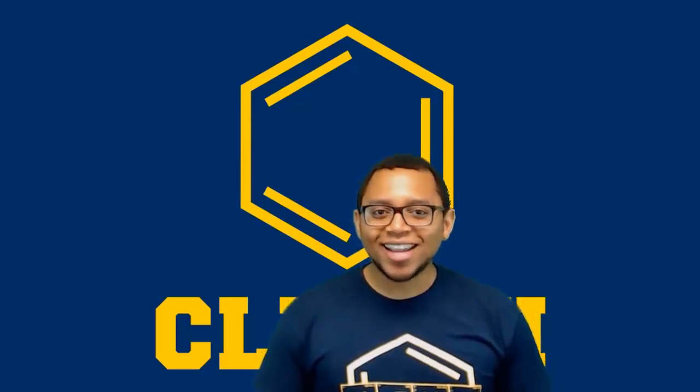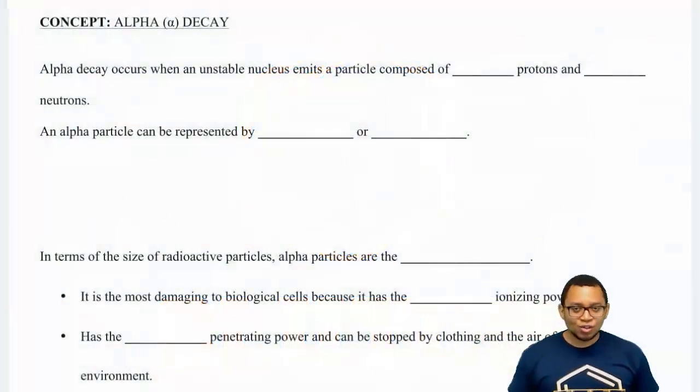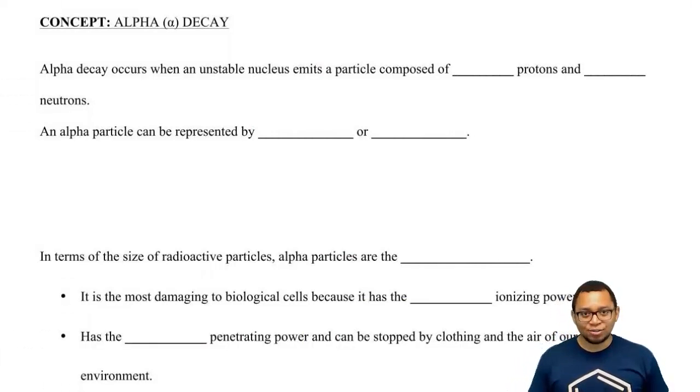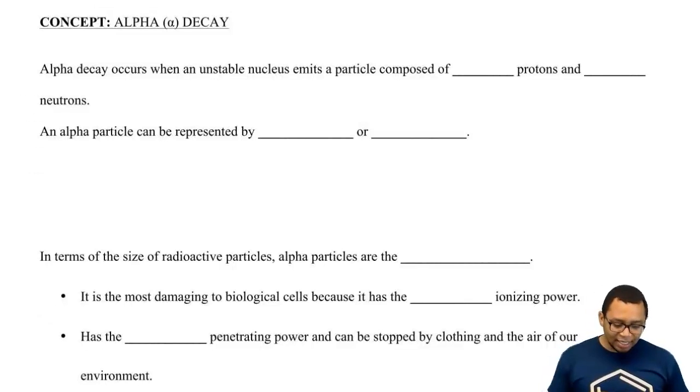Hey guys, in this new video, we're going to take a look at alpha decay. Remember, Rutherford talked about the three major types of decays: alpha decay, beta decay, and gamma emission. Here we have alpha decay.